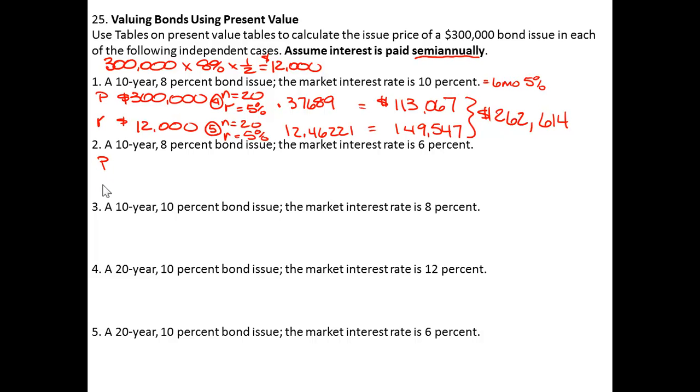Looking at number 2, your principal again is $300,000. Your interest payment is still $12,000. But now we're looking at an N of 20 years still for both of these, Table 4 and Table 5. But our interest rate is 6% a year so that would be 3% for a half a year.